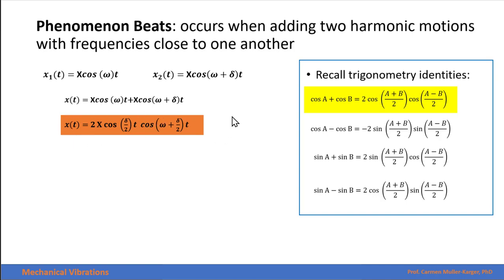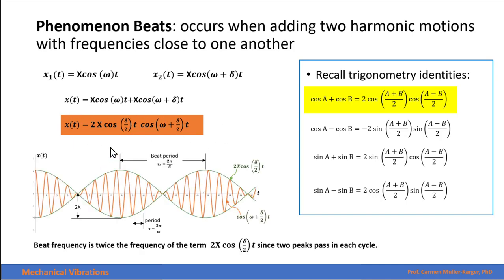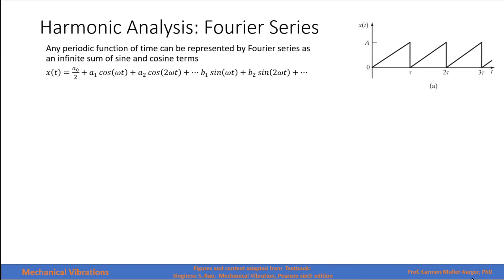If we graph this beat expression, the resulting function is shown by the orange graph, with the slowly varying amplitude envelope shown separately. The envelope goes to zero, rises to a maximum value, then returns to zero, and so on. The green envelope function completes one cycle over what corresponds to two amplitude peaks, so each peak-to-peak span is half the period of the envelope function.